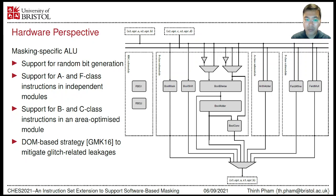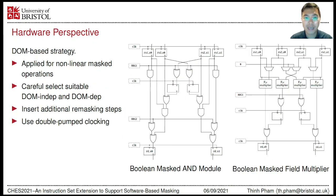Based on the demand of mask operations, the RPG includes two instances. Each instance uses a hybrid design motivated by the trade-off between area, throughput, and randomness quality, including both pseudorandom and true random components. A and F class instructions are supported by separate modules. B and C class instructions are executed in an area-optimized module which leverages interaction and functionality reuse between operations. We carefully mitigate glitch-related leakages in the mask ALU by adopting domain-oriented masking (DOM)-based strategies.